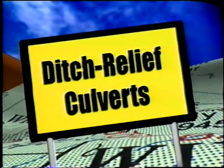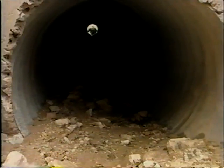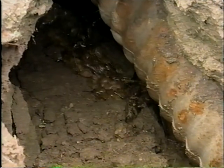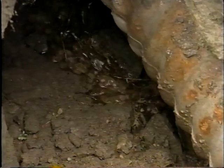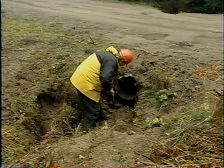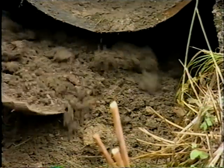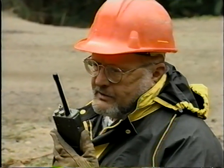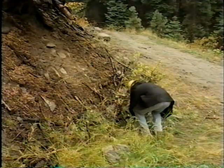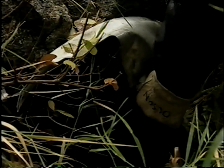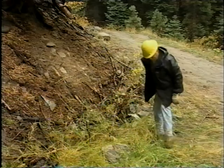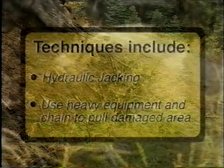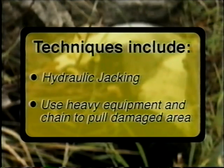As you continue to inspect beyond the traveled way, check the condition of the culverts themselves. Water flowing under or around the culvert is a major problem. One solution is to pack clay material under and around the culvert inlet; the culvert may eventually need to be replaced. Also check to make sure the culvert is not physically damaged. If you find a pipe that's crushed or damaged, try to fix it. Techniques used for field repair include hydraulic jacking or gently pulling the damaged area using a small chain attached to heavy equipment.